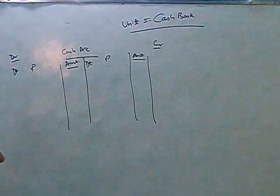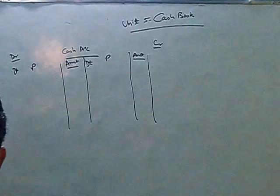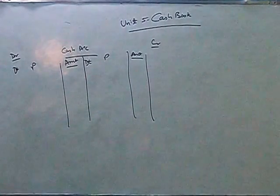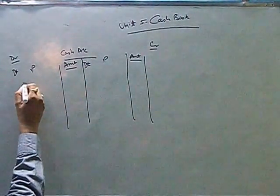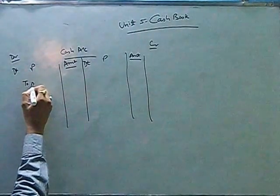Right? And whenever anything comes in for asset, that is debited. So when cash is coming in, we will have cash debit to say sales 5,000.